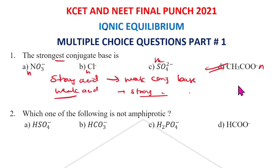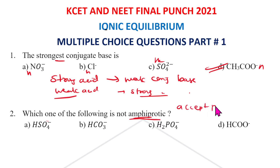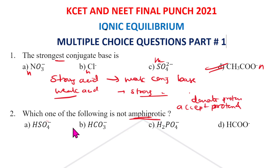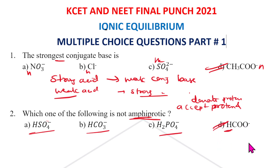Since a weak acid will have a stronger conjugate base, the answer for this question is D. Next question: which one of the following is not amphiprotic? Amphiprotic means a species that can both accept a proton and donate a proton. The answer for this question is D.